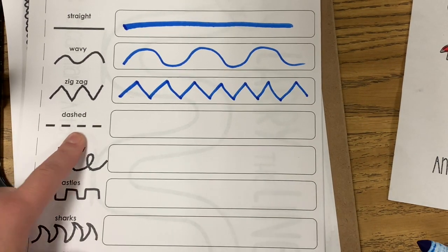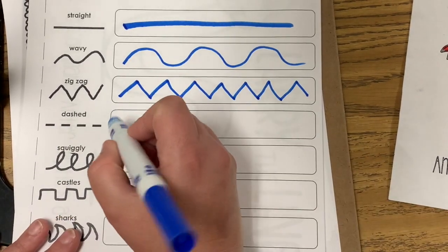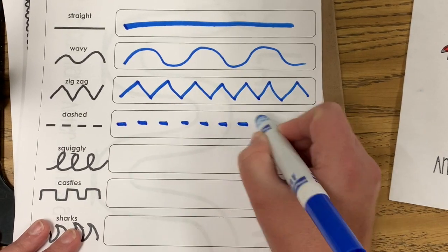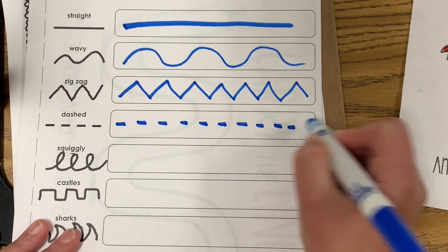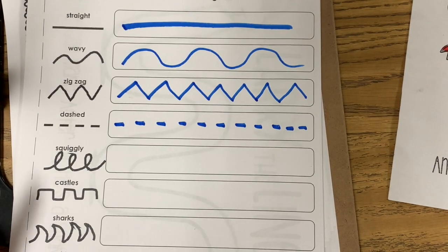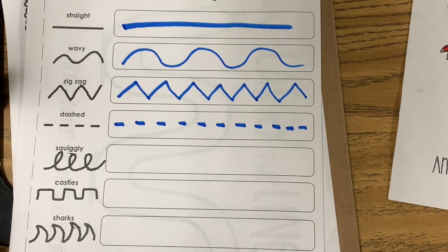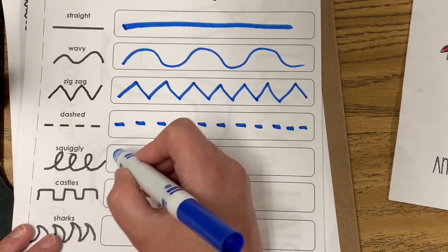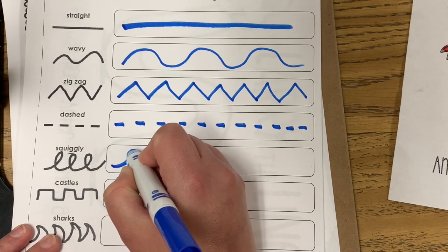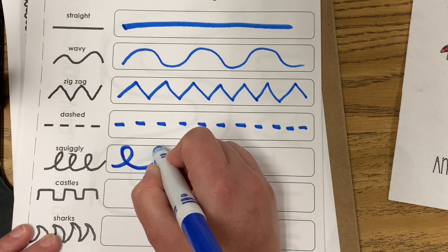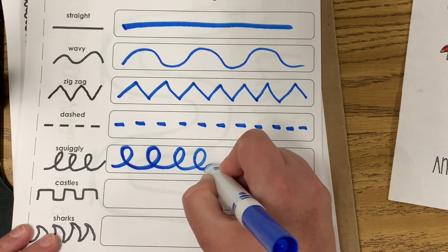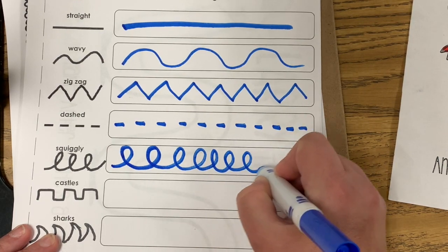Next we have a dashed line — a line that's broken. You just draw little lines all the way across. Our next line is the squiggle line — it's kind of fun to make, like a roller coaster. It goes up to a loop-de-loop. You go up, around, and down, all the way across. This makes a squiggly line.